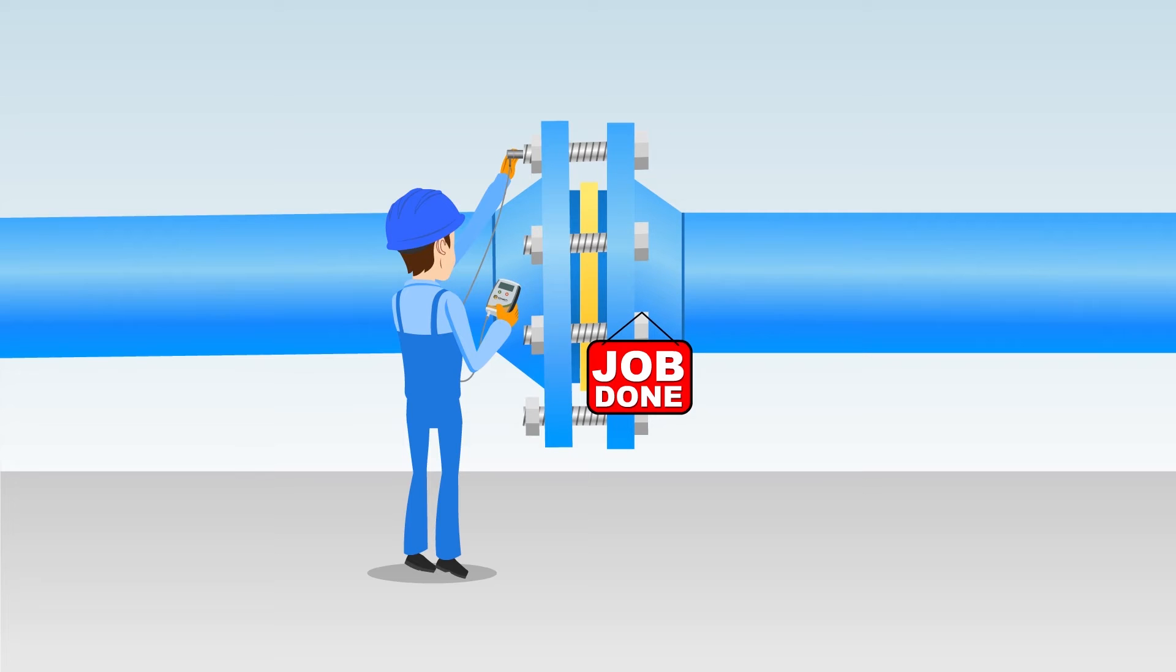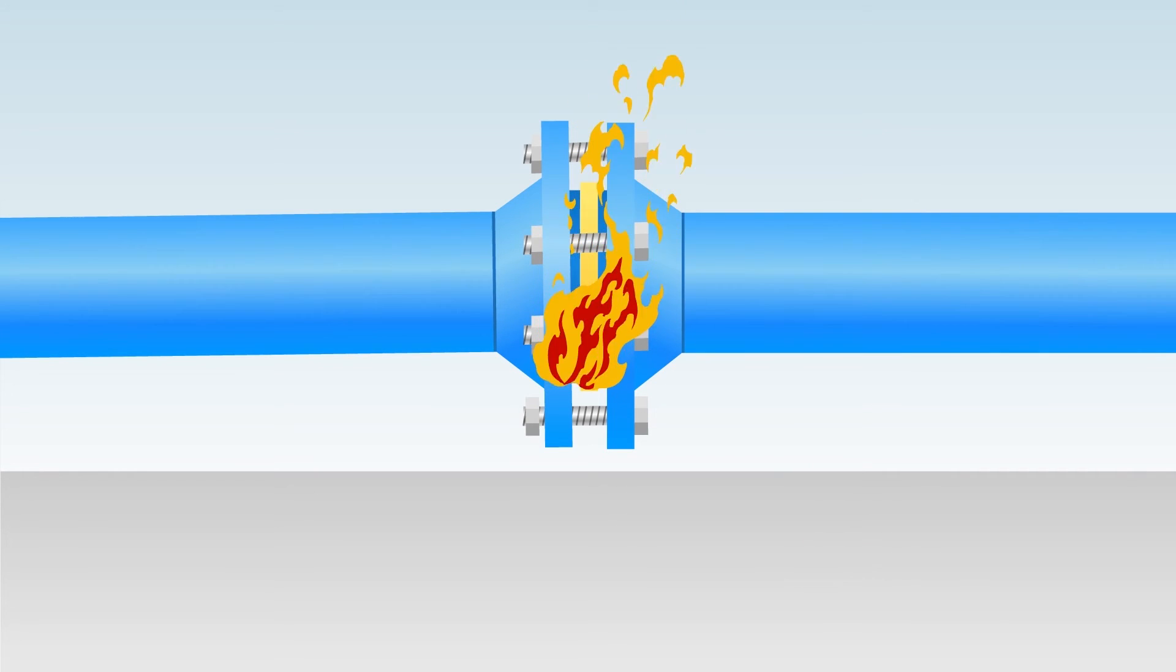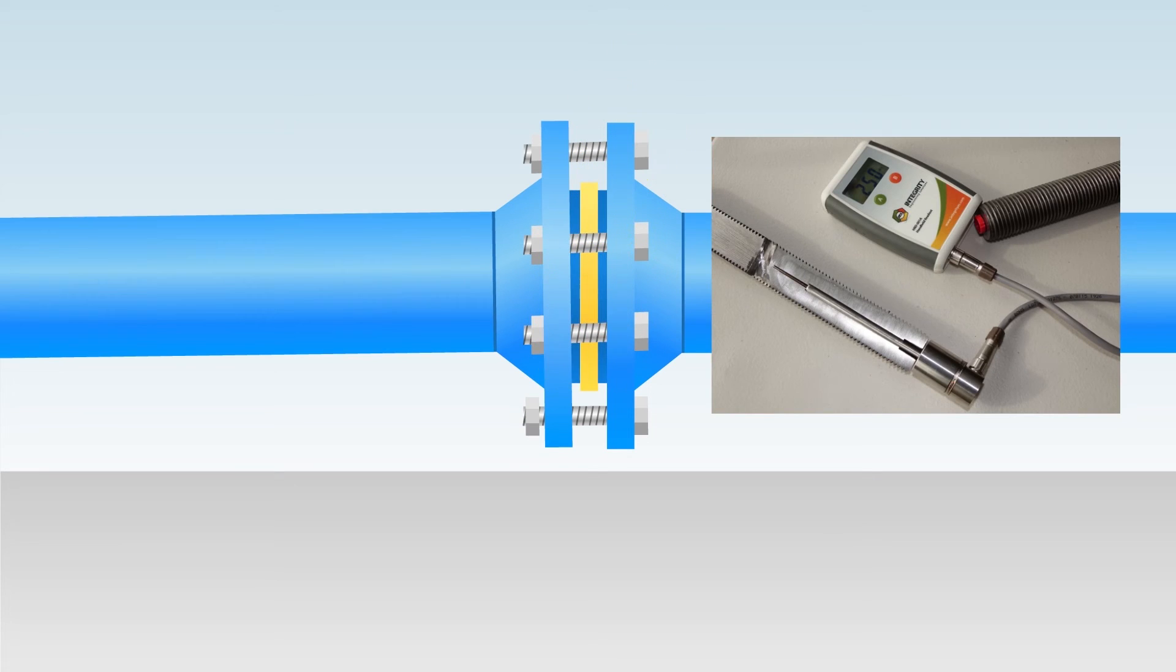RT Bolt Load Measurement allows determination of the residual bolt load after installation and at any time during operation, which allows you to determine if a joint is incorrectly assembled prior to returning it to service. This knowledge enables a step change improvement in assembly practices by eliminating the leading causes of joint leakage: low bolt load and poor assembly practices.